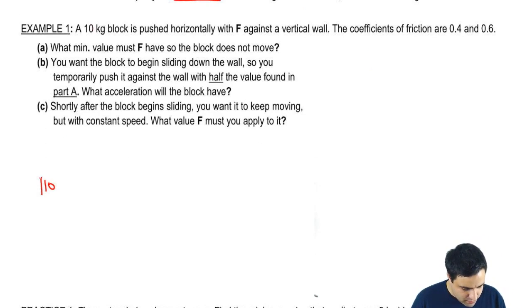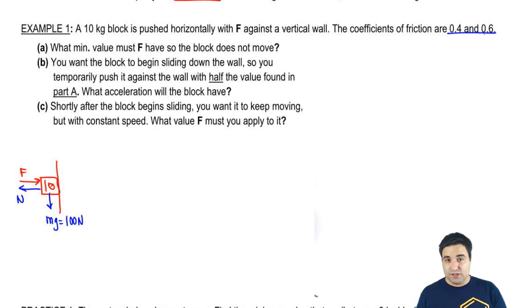Here I have a 10 kilogram block that is being pushed against a vertical wall with a force F. What other forces do I have? First you usually draw mg, because there's always mg. It's mass times gravity, so it's 10 times 10. I'm going to round gravity to 10 just to make it easier, and this will be 100. If I push with an F, there's a counter force here called normal. Since I have coefficient of friction, this is a rough surface, and I have a normal, I will have friction.